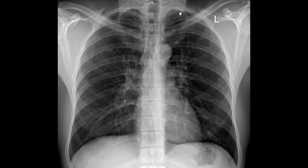When looking at the posterior junction line, it's the same concept: you're looking at four layers of pleura and mediastinal fat. You have the visceral and parietal pleura of the left upper lobe and the visceral and parietal pleura of the posterior segment and apical segment of the right upper lobe. Then there is mediastinal fat that comes in from this little triangle posteriorly and insinuates here.